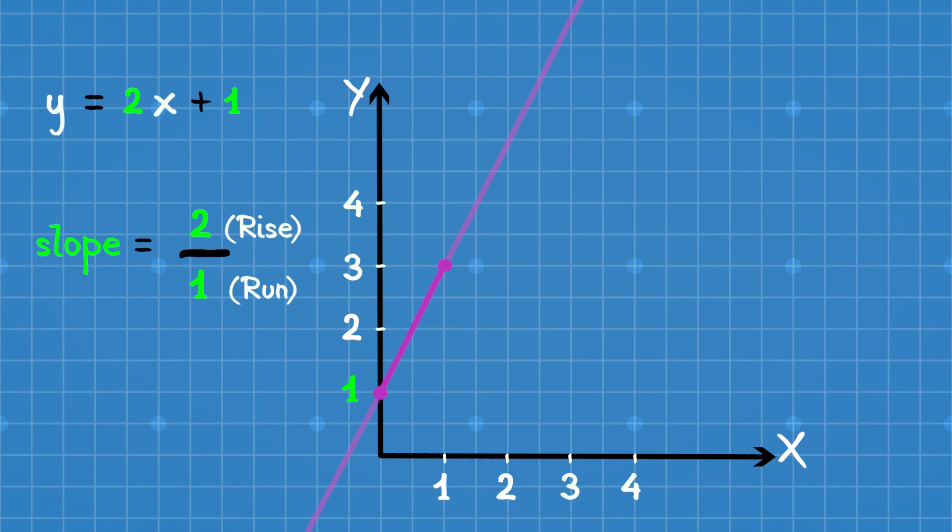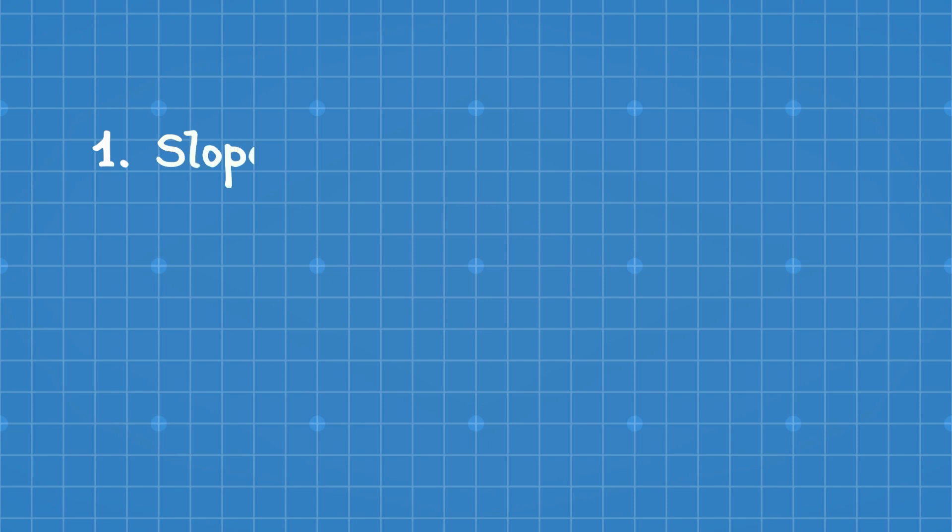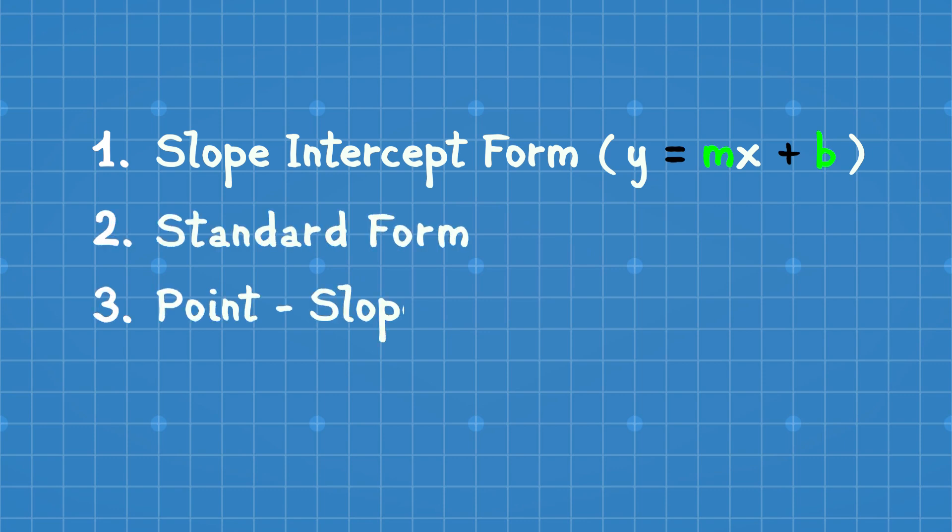Moving on, it's time to get our hands dirty on different forms of linear equation and the ways to graph them. Linear equation is written in four different forms: the slope-intercept form y equals mx plus b, which we have already discussed in detail; the standard form; the point-slope form; and the intercept form.